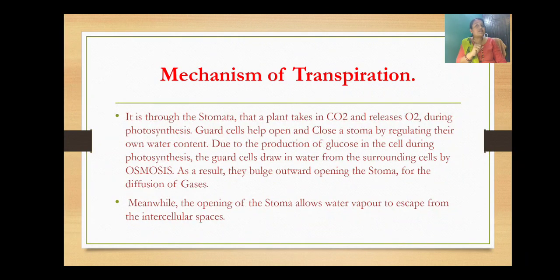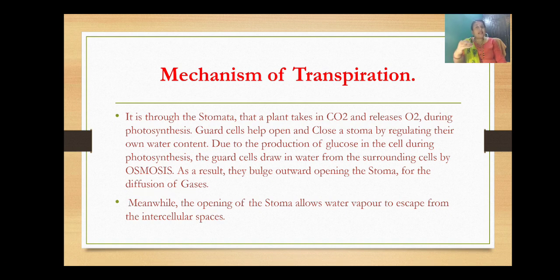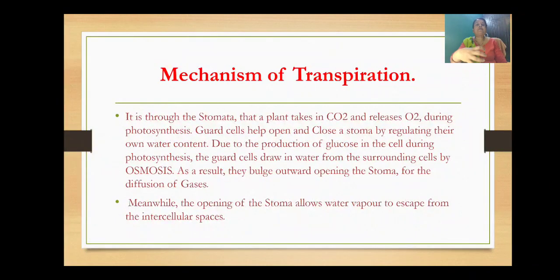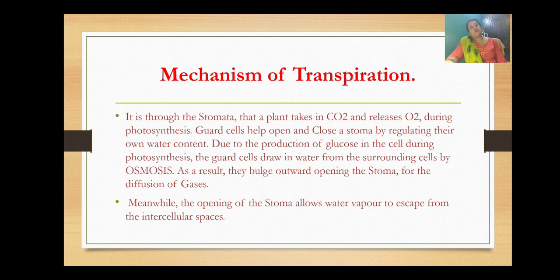Cell-to-cell osmosis takes place in the plant body when water is transported along with minerals. When osmosis takes place, the water molecules are carried forward from one cell to another. As a result, the guard cells bulge outward, opening the stoma for the diffusion of gases.